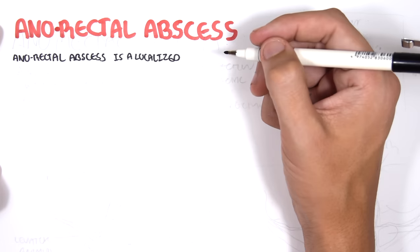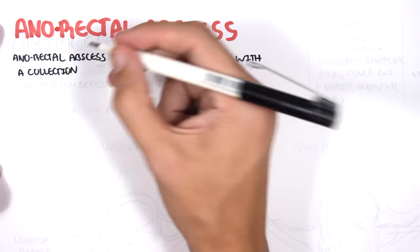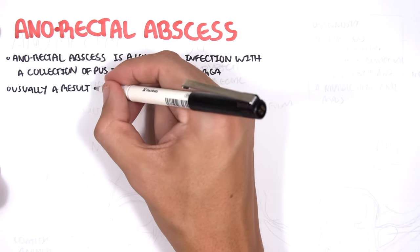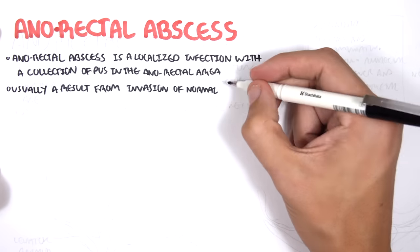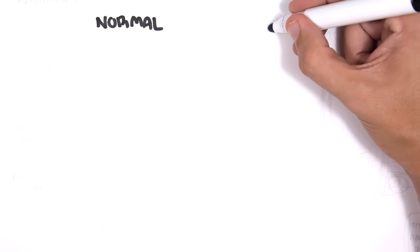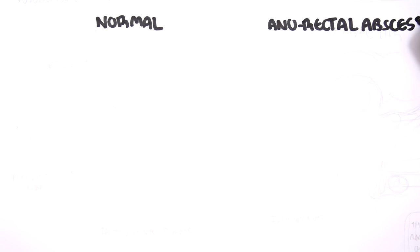Anorectal abscess is a localized infection with a collection of pus in the anorectal area. The abscess is usually a result from invasion of normal rectal flora, so the normal microbes in the anorectal area cause an anorectal abscess.